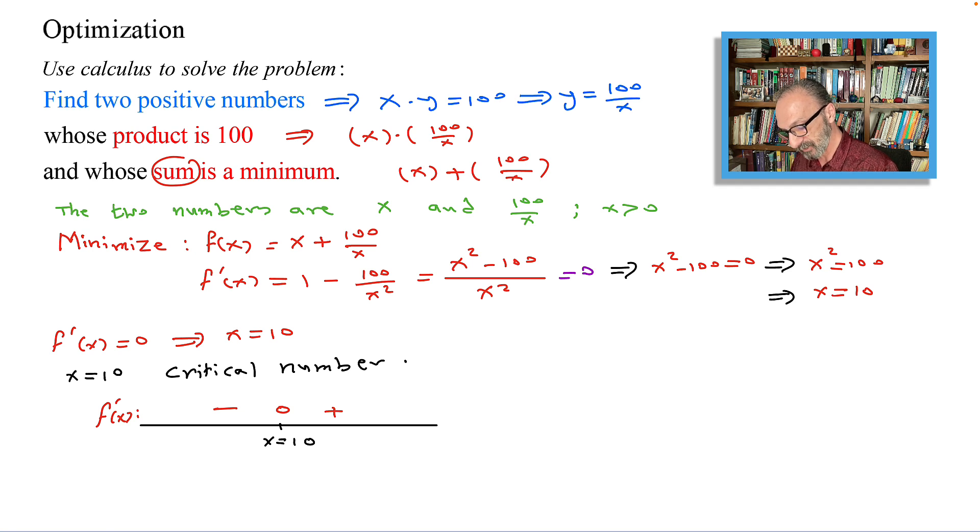That says that the function is decreasing on the left of zero and increasing to the right of x equals 10.